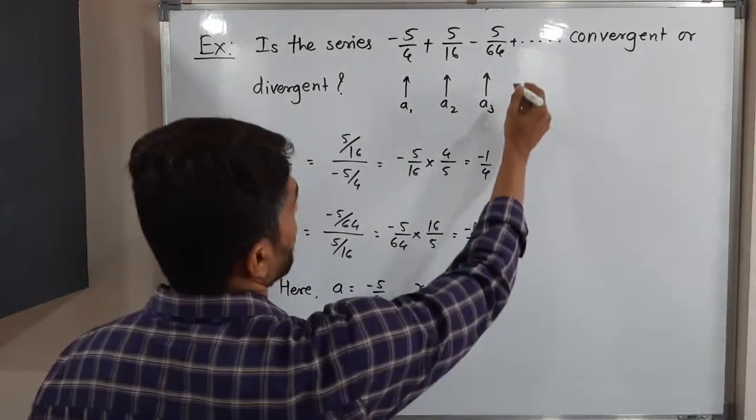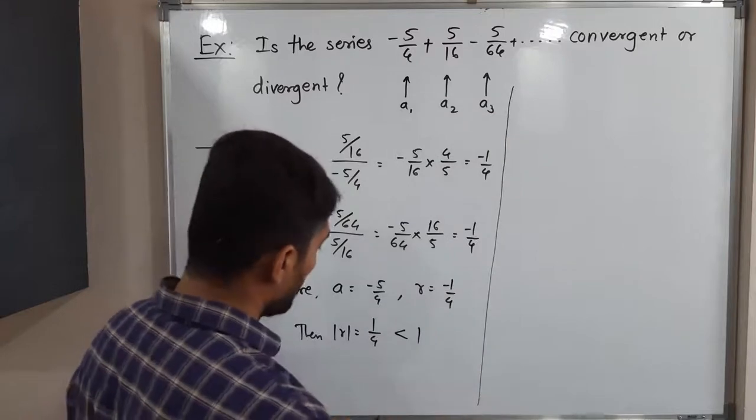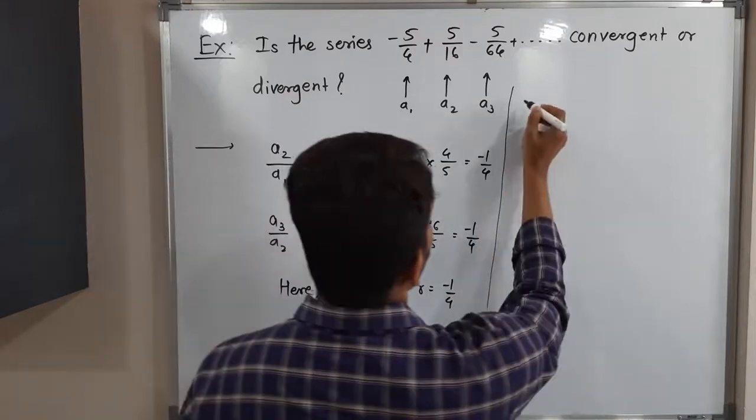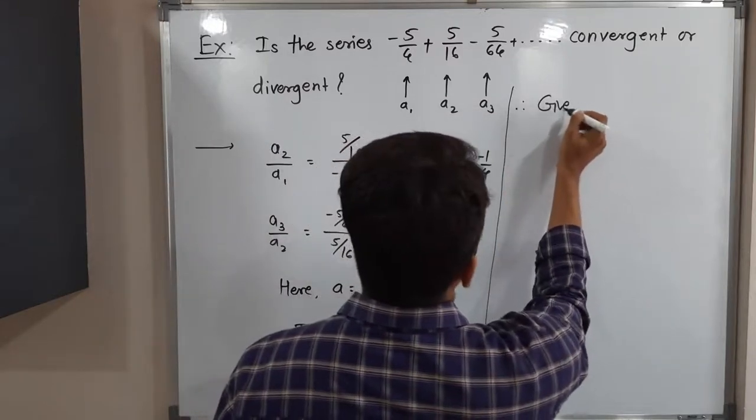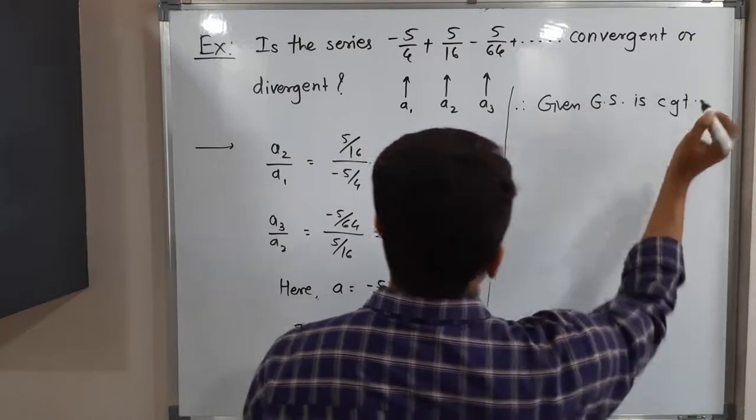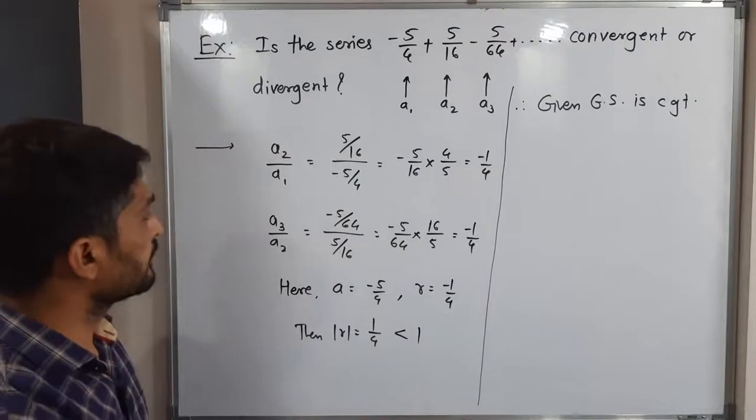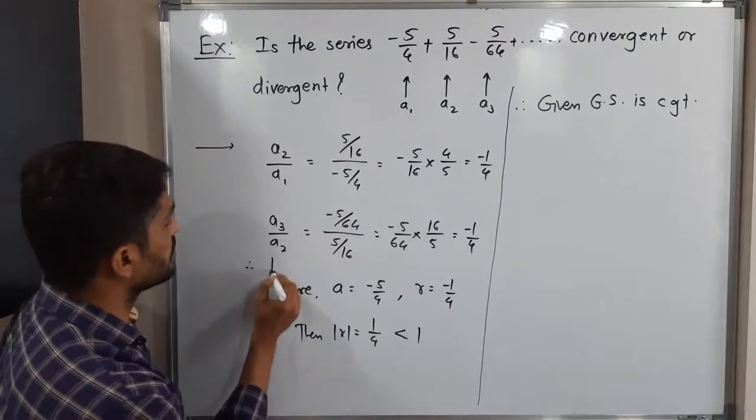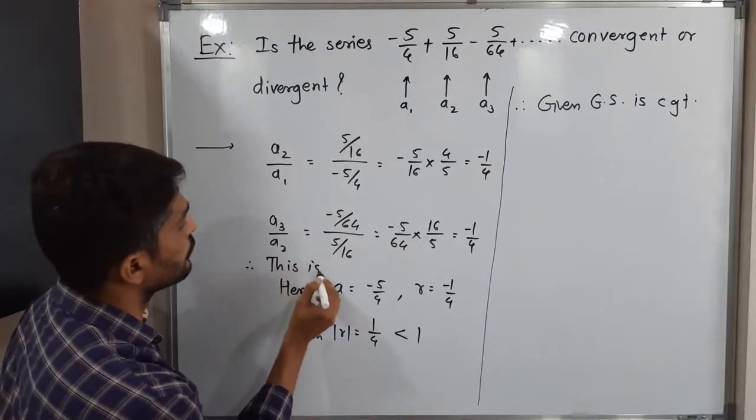So here also I will mention, let me write it here. So mod R is less than 1. Therefore, the given geometric series is convergent. So this is the geometric series I should mention here. Therefore, this is a geometric series.